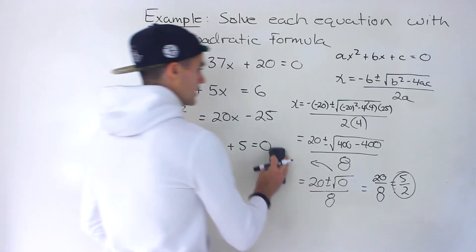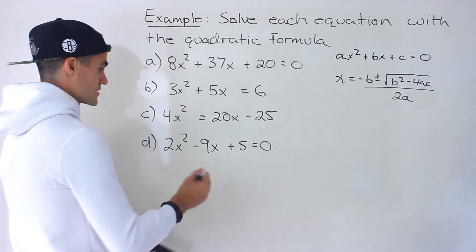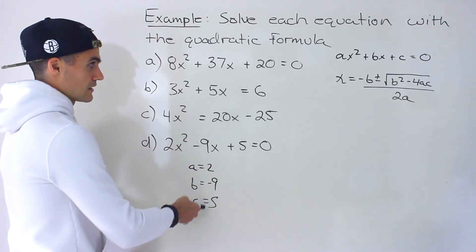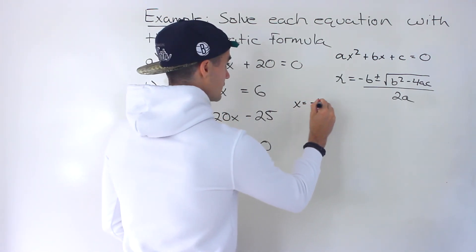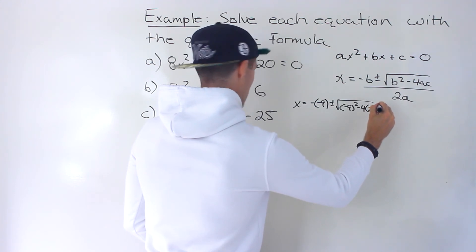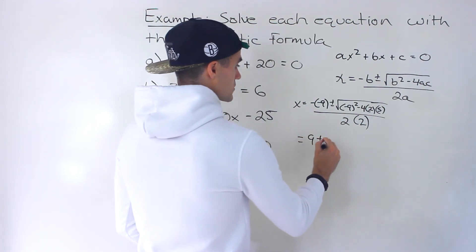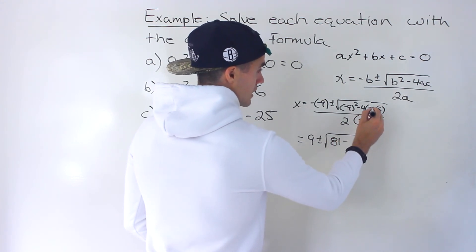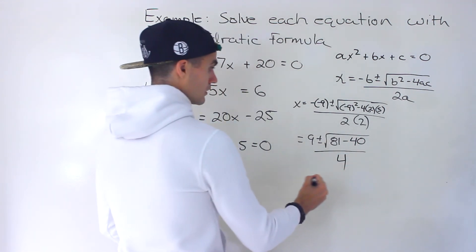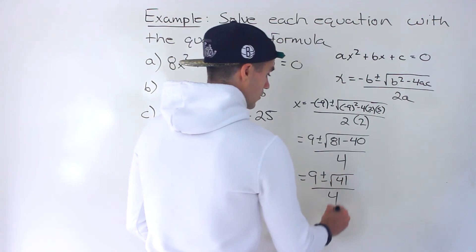Finally, part D. We have 2x squared minus 9x plus 5 equals zero — it's already in the format we want. A is 2, b is negative 9, c is 5. Plugging into the formula: x equals negative of negative 9 plus or minus the square root of negative 9 squared minus 4 times 2 times 5, all over 2 times 2. We get 9 plus or minus the square root of 81 minus 40, all over 4. That gives us 9 plus or minus root 41, all over 4.